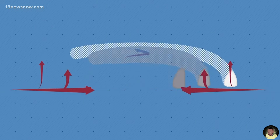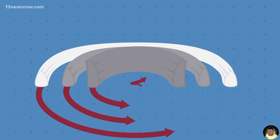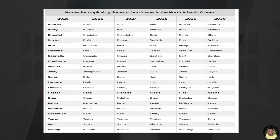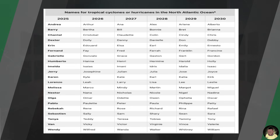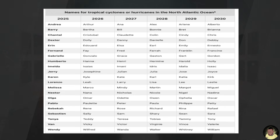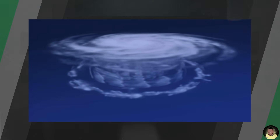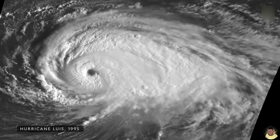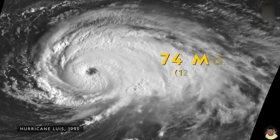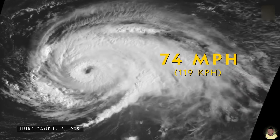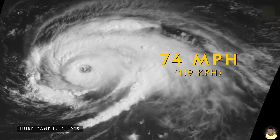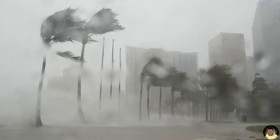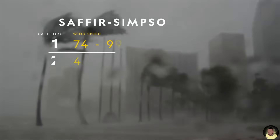When winds exceed 39 miles per hour, the depression becomes a tropical storm and is given a name from a predetermined alphabetical list of alternating male and female names, which are recycled every six years. As the tropical storm becomes more organized, more air rushes to the center of low pressure. When atmospheric pressure continues to fall and winds reach 74 miles per hour, a hurricane is officially born and is given a Category 1 rating on the Saffir-Simpson hurricane wind scale — a 1 to 5 rating based only on maximum sustained wind speed.